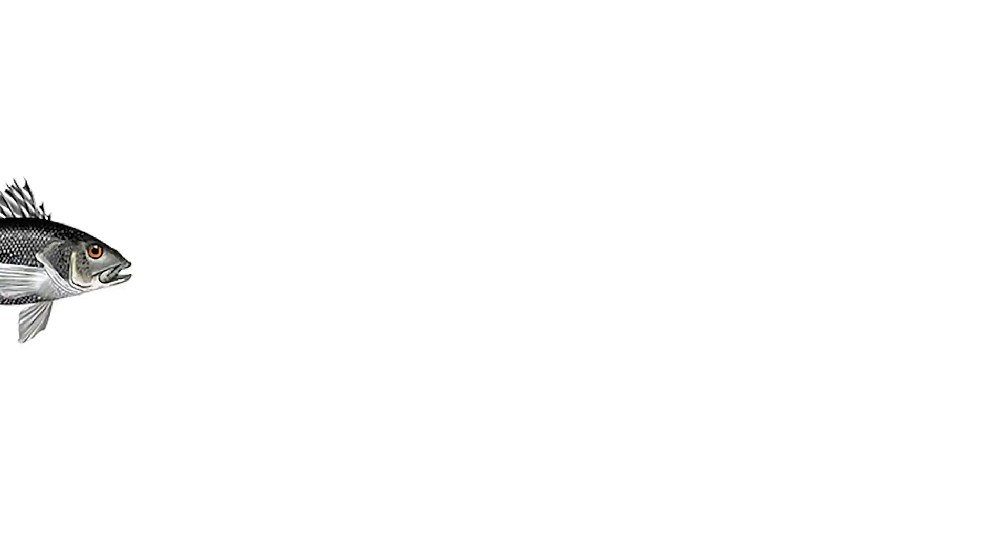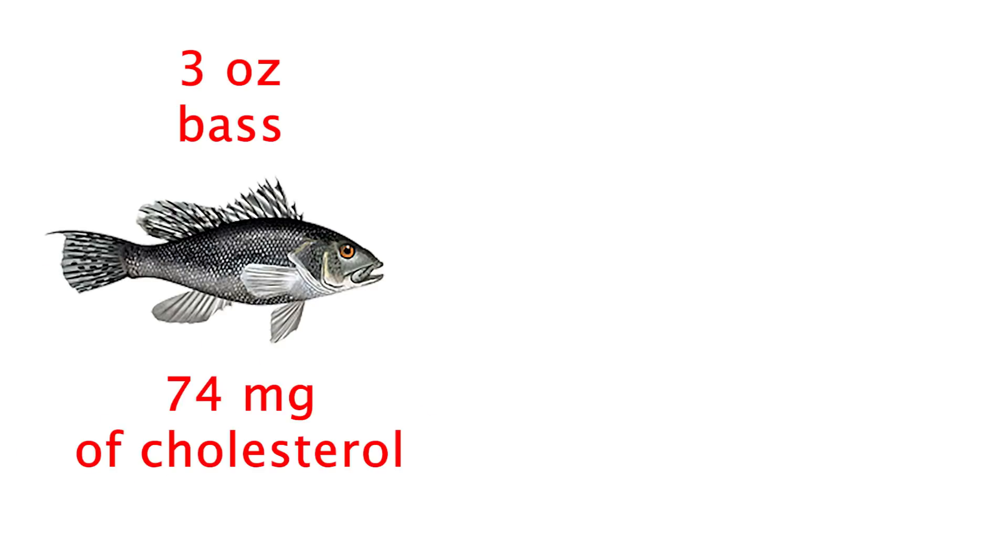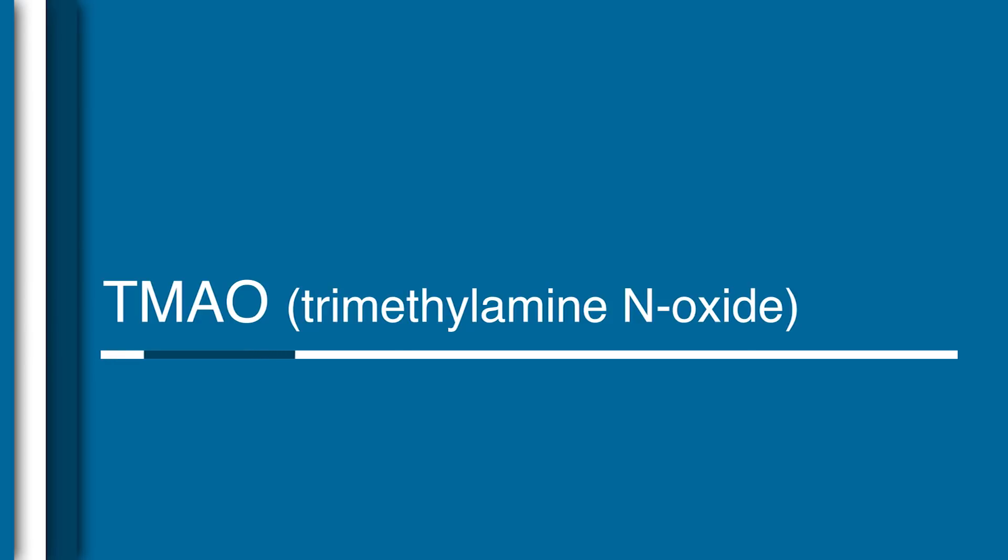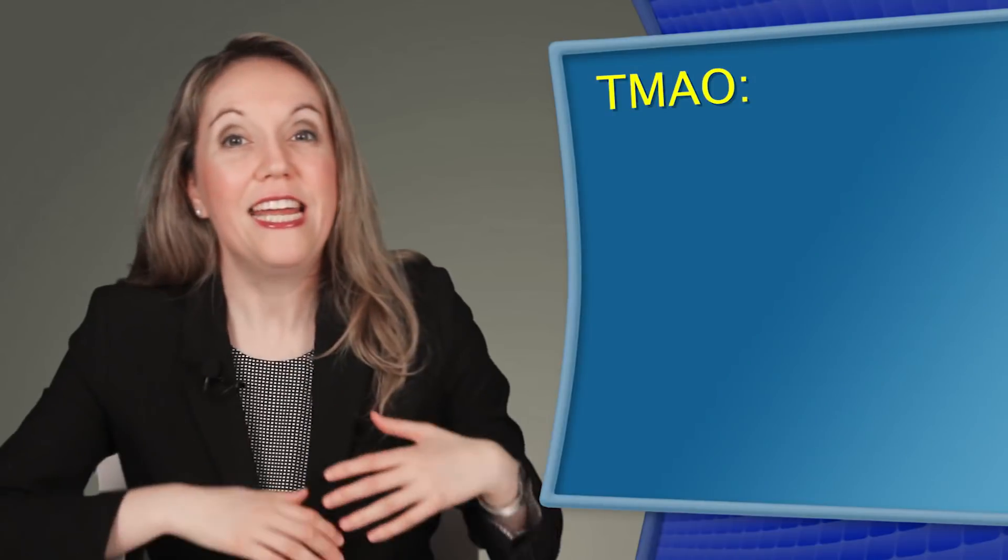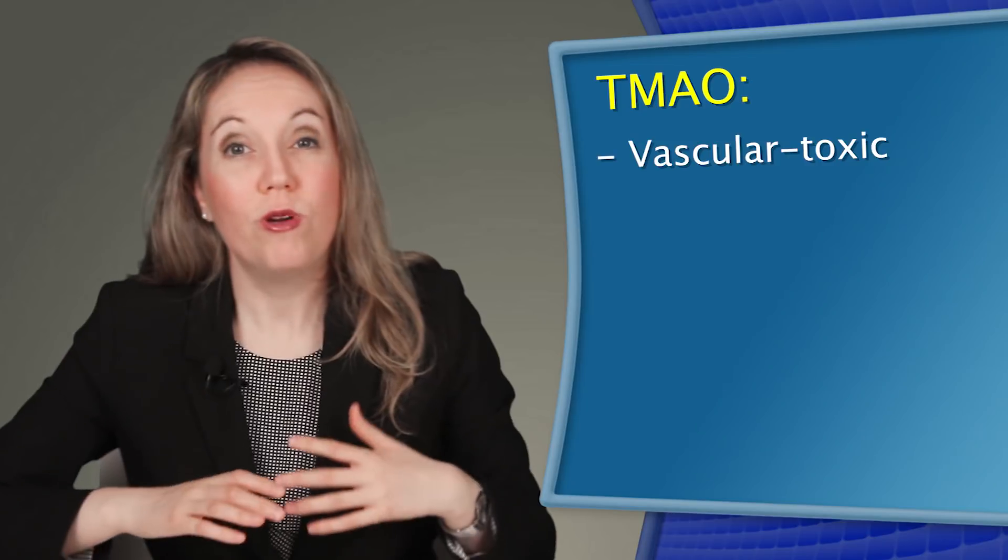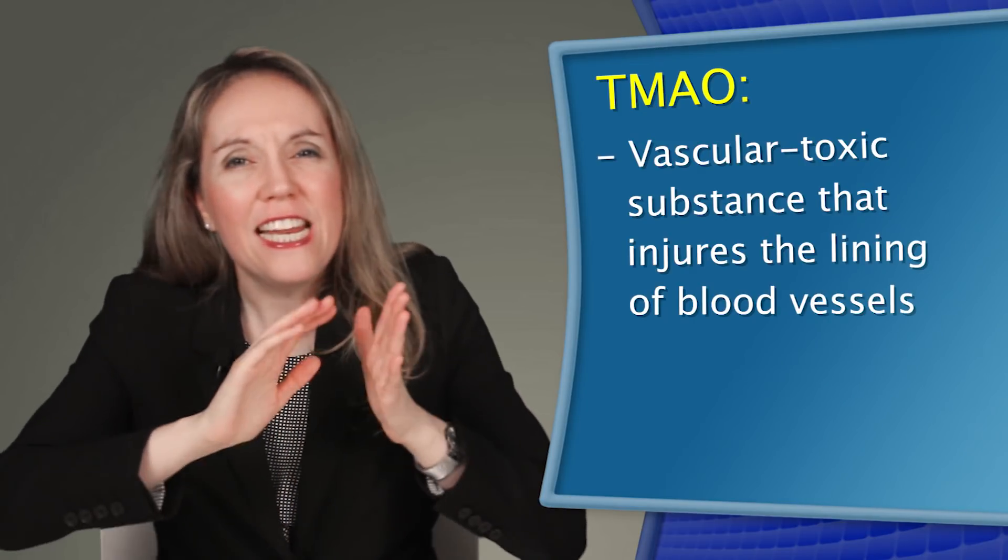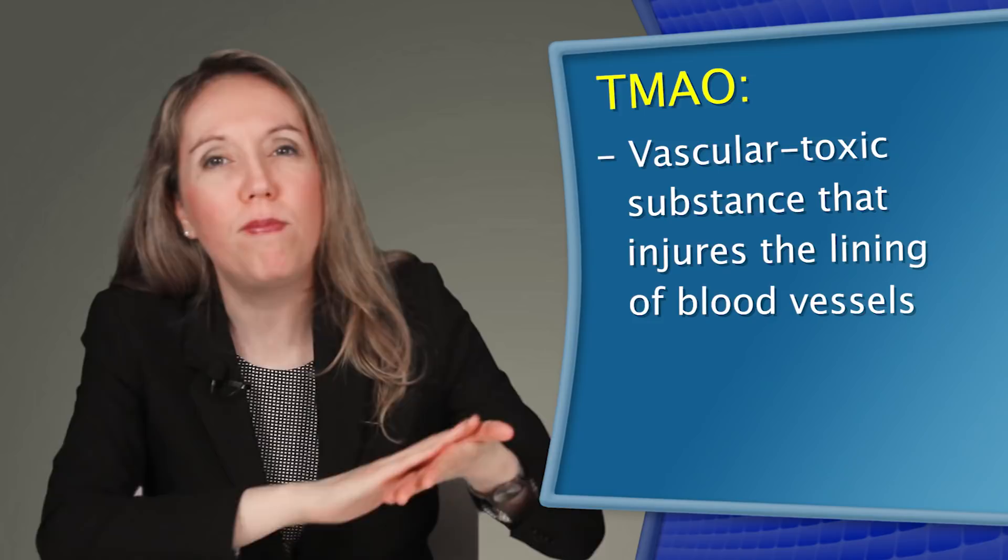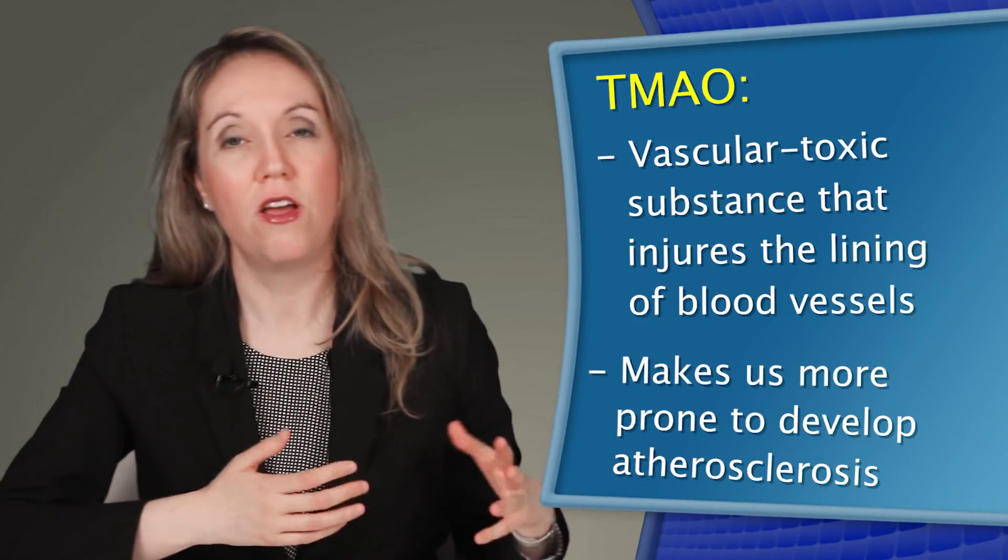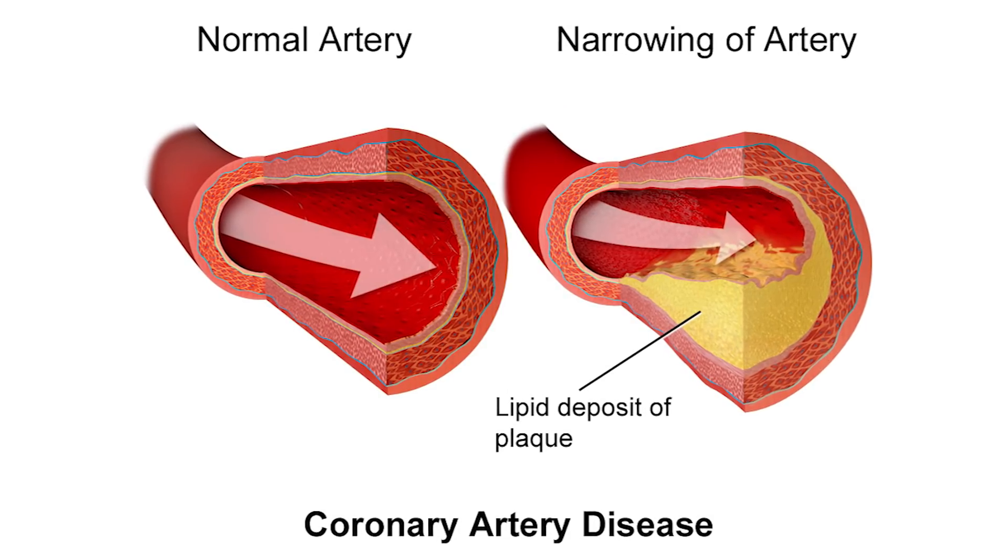For example, 3 ounces of sea bass has about 74 mg of cholesterol, about the same as the 75 mg of cholesterol found in the same amount of beef. And if that wasn't enough, eating animal foods in general, including fish, increases our levels of TMAO, which is a vasculotoxic substance that injures the lining of our blood vessels and makes them more prone to develop atherosclerosis, or to build up cholesterol plaques in the blood vessels.